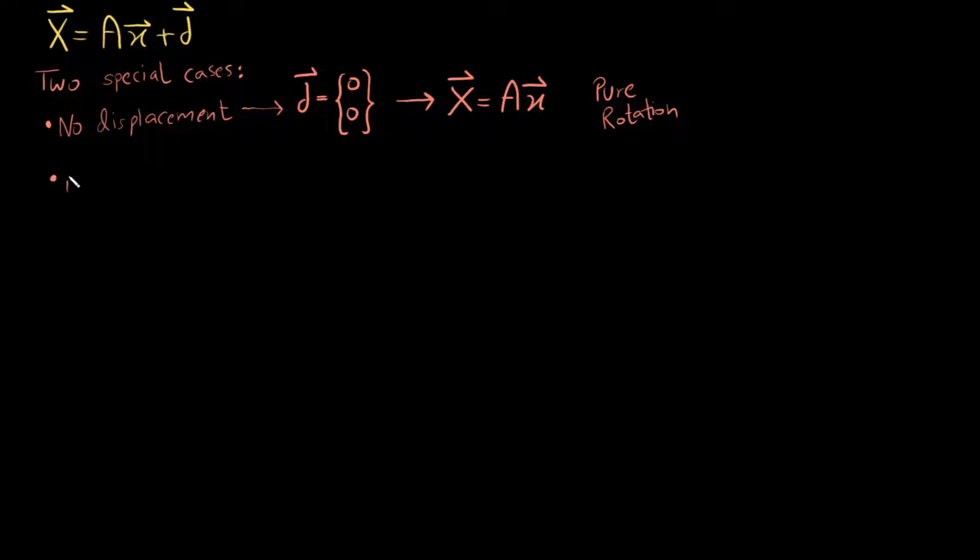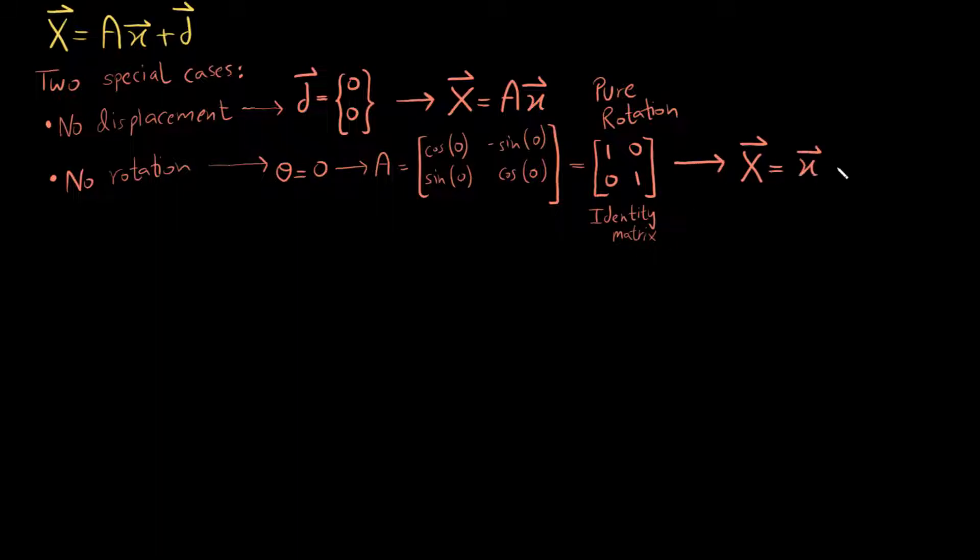And the second case is when there is no rotation. So the angle theta is 0, when I put 0 in the rotation matrix I get an identity matrix. And as we know anything multiplied by the identity matrix is going to give me the same matrix. So when I multiply the identity matrix by the small x I get small x. So hence I get the equation big X equals small x plus d which is the same equation that we got for pure translation.